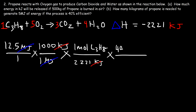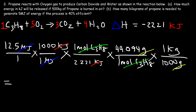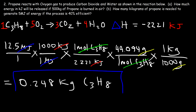We convert moles of propane to grams using the molar mass of 44.094 grams per mole, then convert grams to kilograms using 1000 grams per kilogram. The full calculation is: 12.5 times 1000, divided by 2221, multiplied by 44.094, divided by 1000, giving 0.248 kilograms of propane. That's how much propane we need to burn to generate 5 megajoules of usable energy at 40% efficiency.